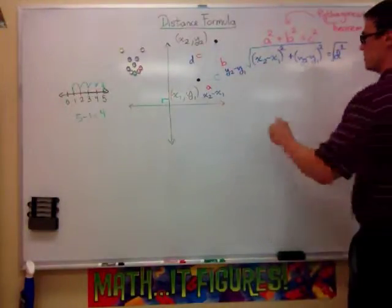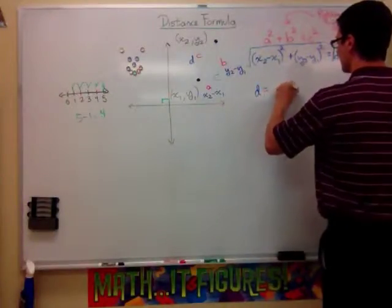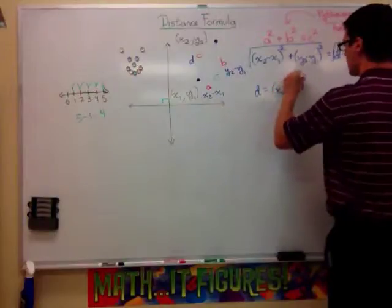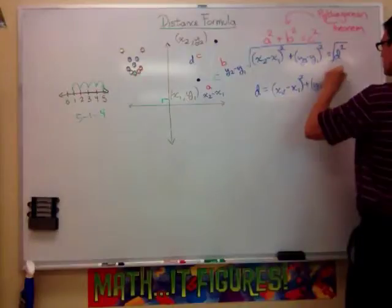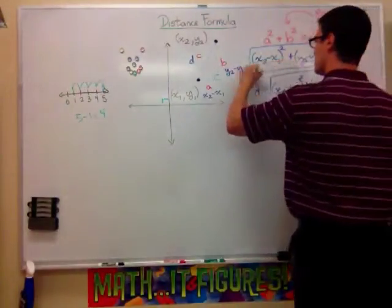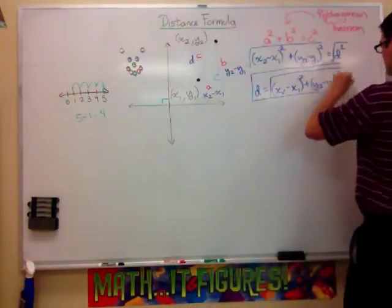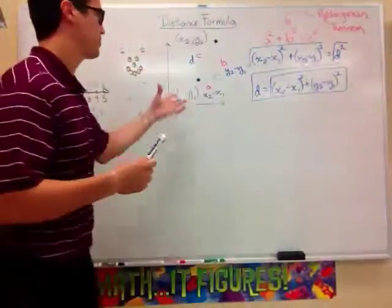And you end up with d by itself, equal to x2 minus x1 quantity squared plus y2 minus y1 quantity squared. And then you take the square root of all this. And you end up solving for d and proving the distance formula based on Pythagorean theorem.